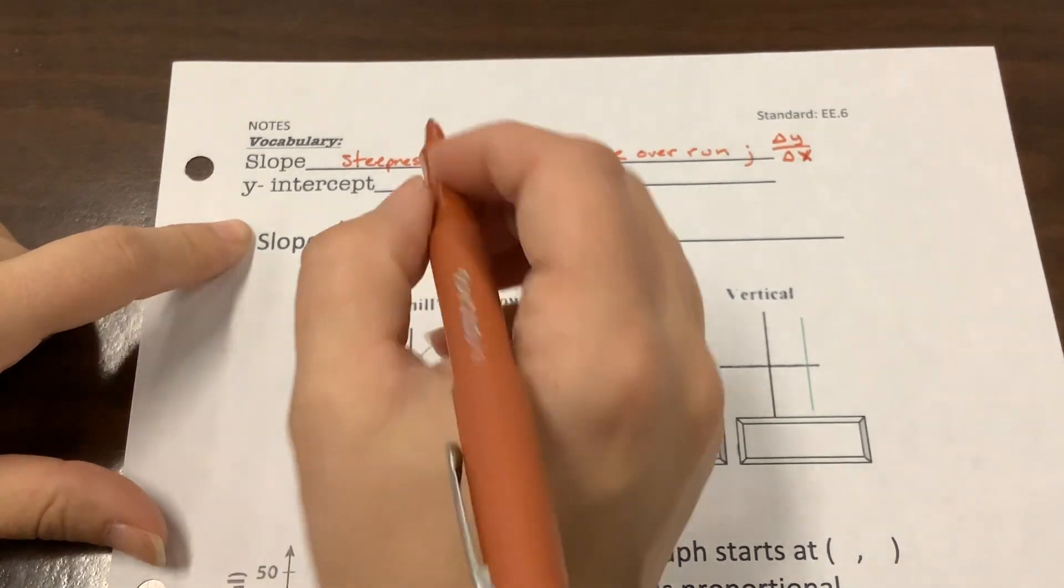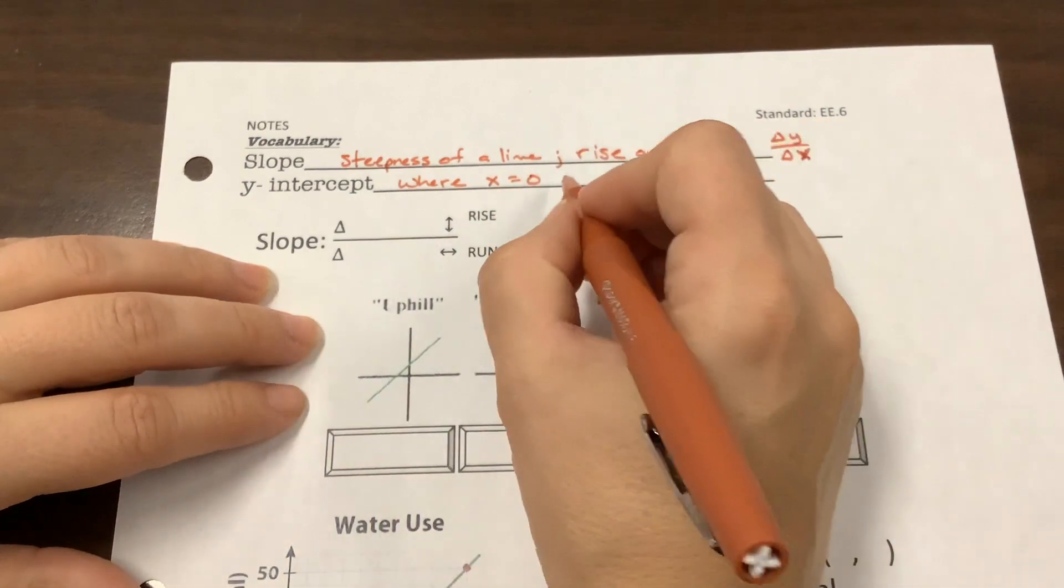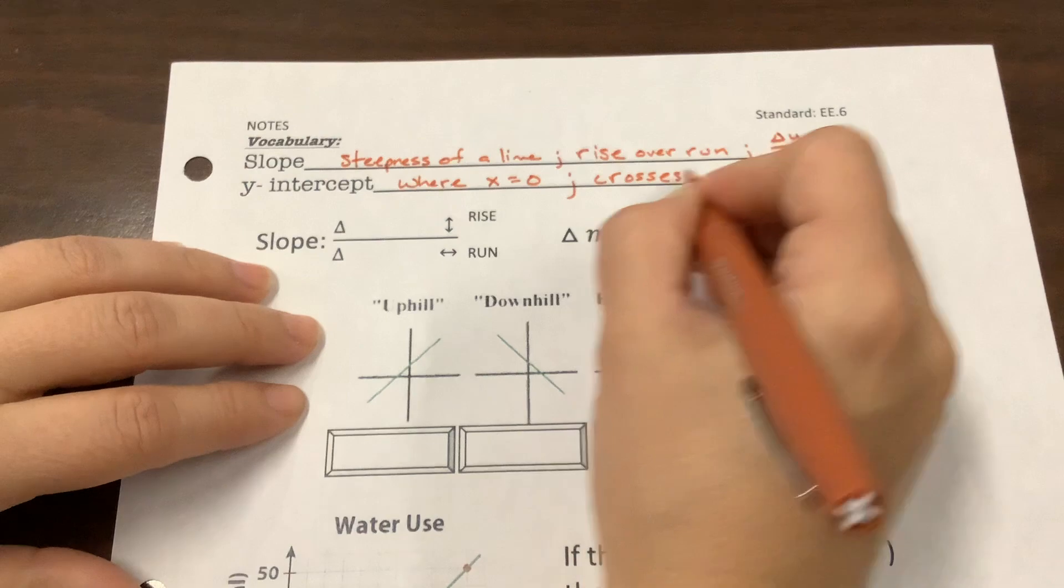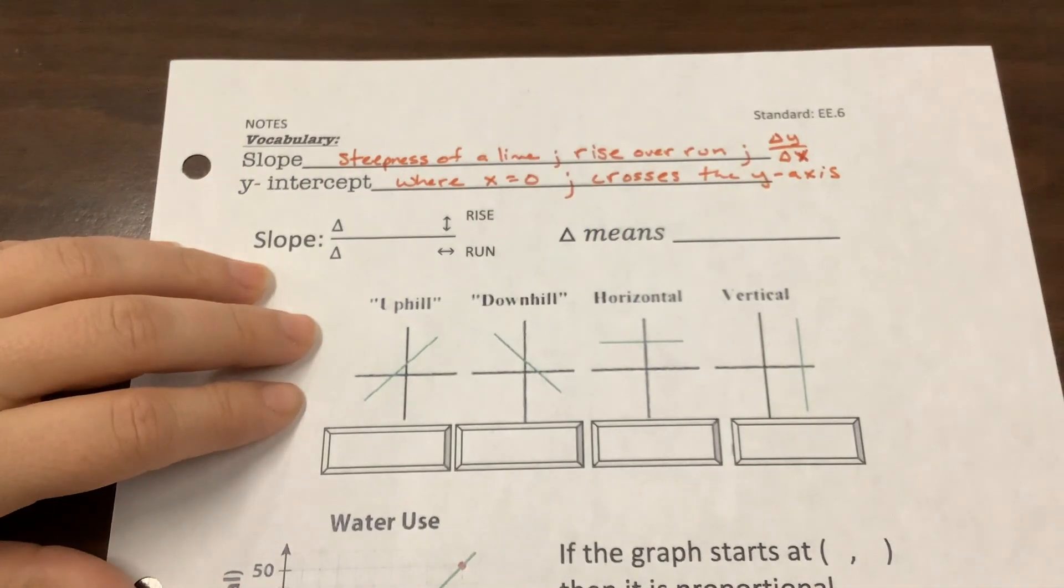The y-intercept is where x equals 0. Where x equals 0, that's where it crosses the y-axis on a graph. I'll show you what these two look like.